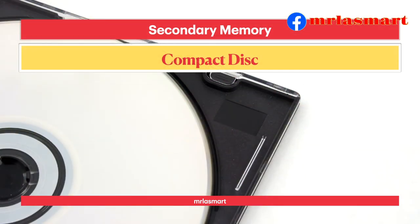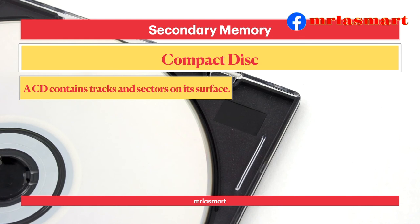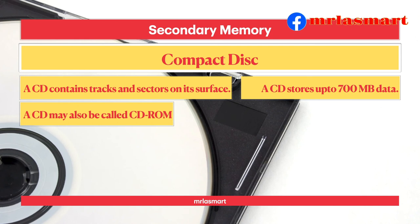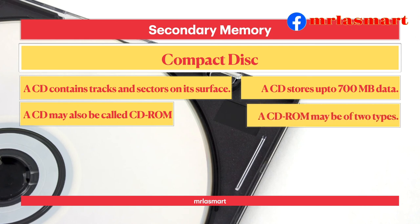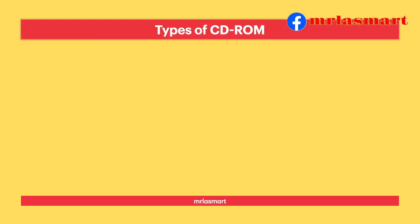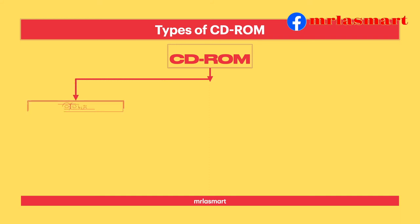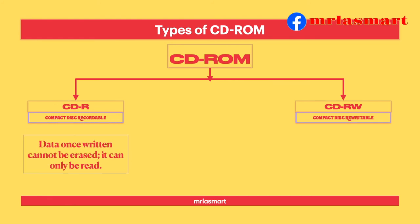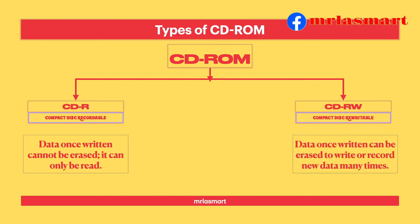Compact disk: A CD contains tracks and sectors on its surface and stores up to 700MB of data. A CD may also be called CD-ROM. Types of CD-ROM — CD-R (Compact Disk Recordable): data once written cannot be erased and can only be read. CD-RW (Compact Disk Re-Writable): data once written can be erased to write or record new data many times.